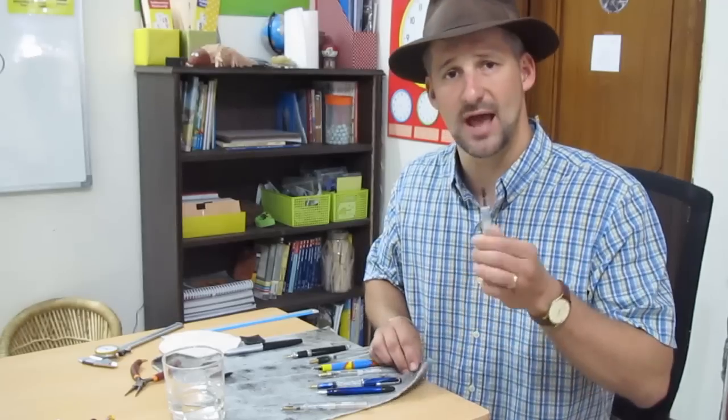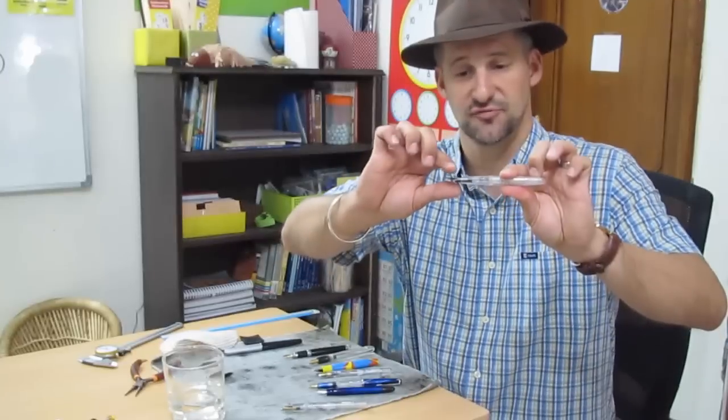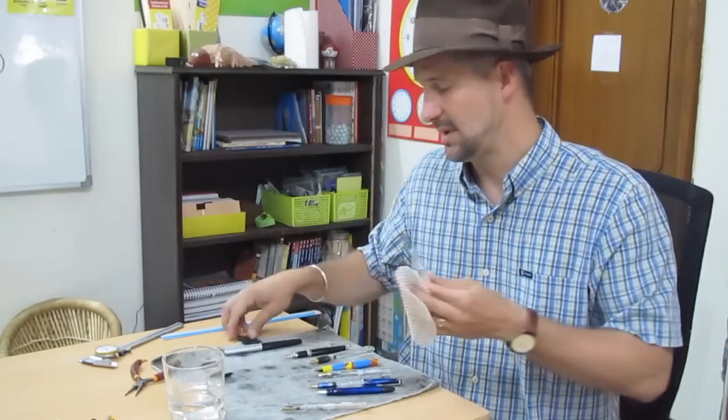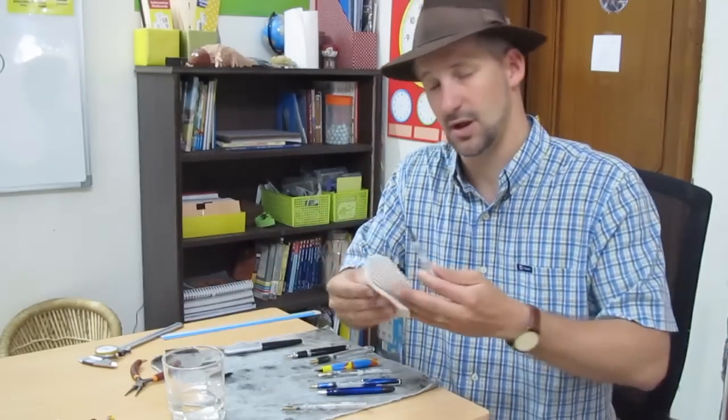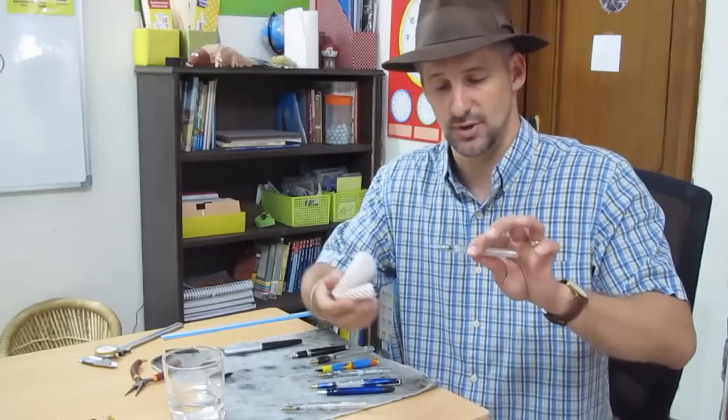So first we'll talk about how to remove the nib and feed. That's pretty simple. What you're going to do is basically you're going to put your forefinger on top and your thumb on bottom and pull. What I recommend is having maybe a piece of rubber sheeting or even one of these jar openers just to provide a little extra cushion and grip.